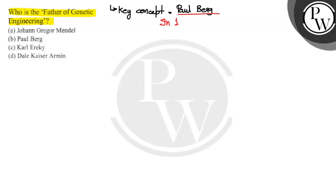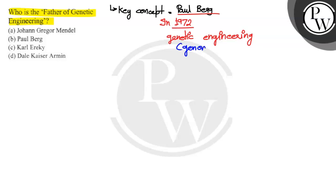In 1972, they had done genetic engineering. What do we mean by genetic engineering? What did they do in any genome? They gave them a modification. This is called genetic engineering — a modification in the genome. What does engineering mean by the name of the genome? Cut, paste, introduction. So, when we put a modification in the genome, we call it genetic engineering.